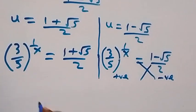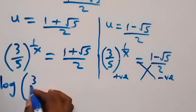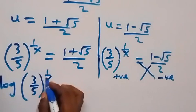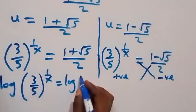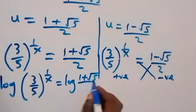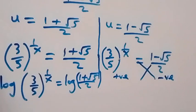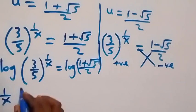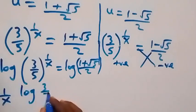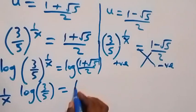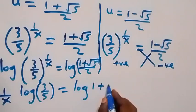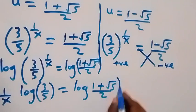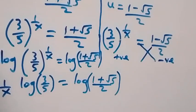So we work with the valid case. We take the log on both sides: log of 3 over 5 raised to power 1 over x equals log of 1 plus root 5 over 2. Then applying the power law of logarithms, we bring 1 over x to the front: 1 over x times log of 3 over 5 equals log of 1 plus root 5 over 2.